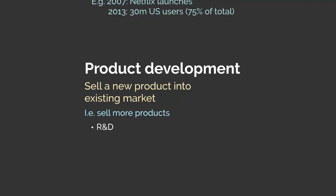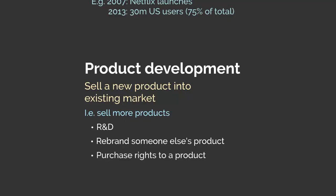Product development can be achieved in several ways. First, the entity can create an R&D department to spot needs in their existing markets and create products accordingly. They could also rebrand someone else's product and sell it into their existing market, leveraging their existing contacts.